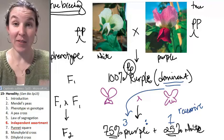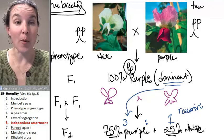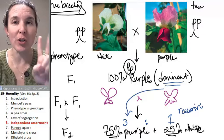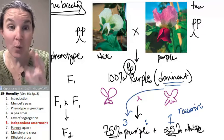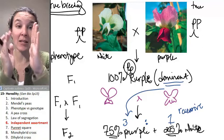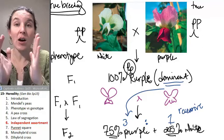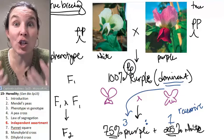Now, the concept of independent assortment is going to come up only if we're dealing with two traits on two separate chromosomes. Remember that independent assortment is just the random way that homologs align during meiosis.